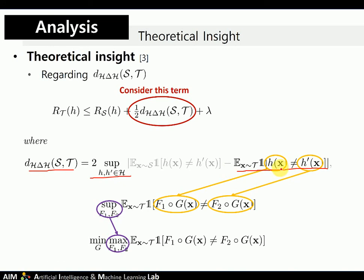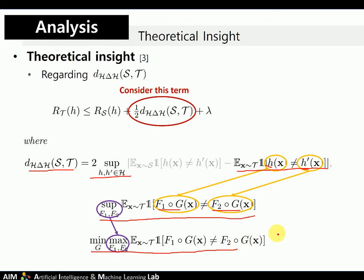Assuming H and H' share the feature generator G, we can decompose hypothesis H into F1 ∘ G and H' into F2 ∘ G. Substituting these notations and fixing G, then replacing the supremum with max and minimizing with respect to G, we obtain an equation very similar to the minimax problem in this paper — where classifiers are trained to maximize their discrepancy on target samples and generator G tries to minimize it.